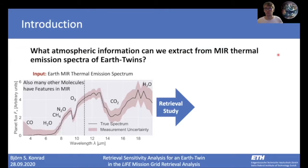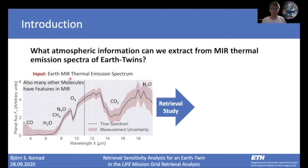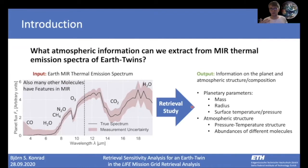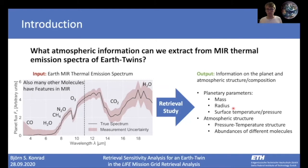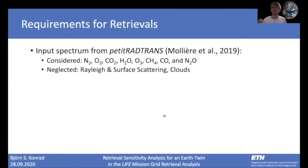First of all I would like to give a brief introduction into what a retrieval does. We start with some sort of an input spectrum, which in our case is the thermal emission spectrum of an Earth-twin exoplanet, and you can already see there are many absorption features from different molecules. The goal of a retrieval study is to find information on the atmospheric structure and composition from this input spectrum — so basically we ask ourselves: given this input spectrum, what is the mass, the radius, the surface temperature, the atmospheric pressure-temperature structure, and what are the abundances of the different molecules?